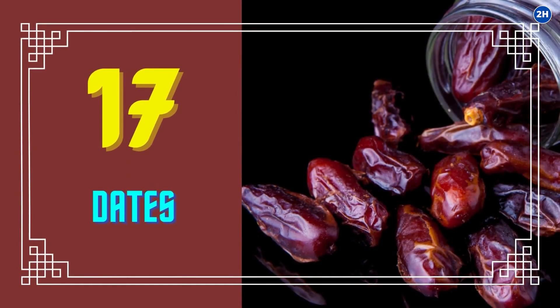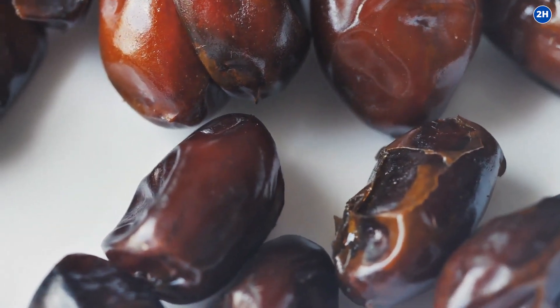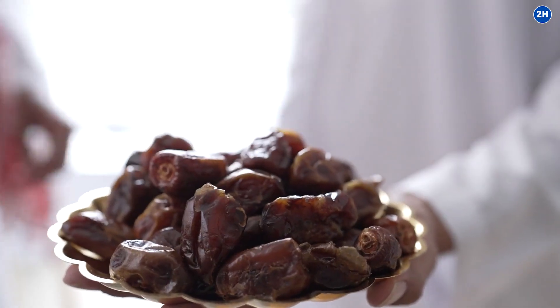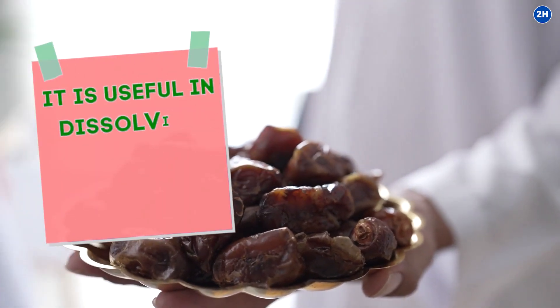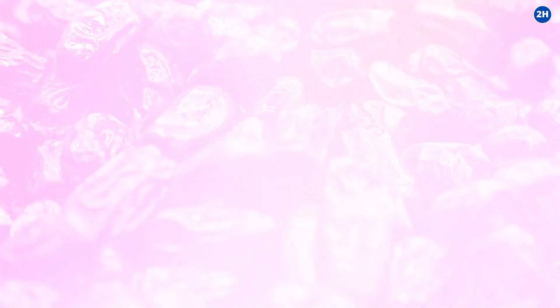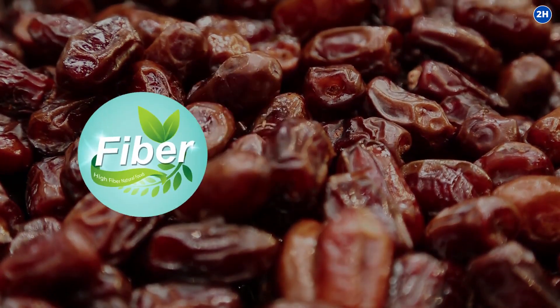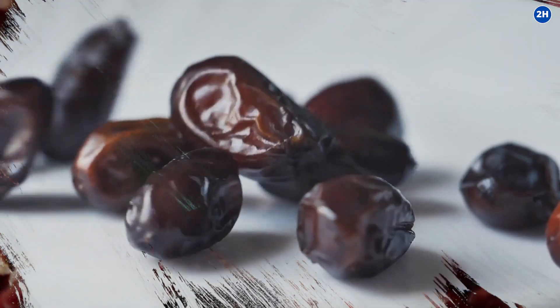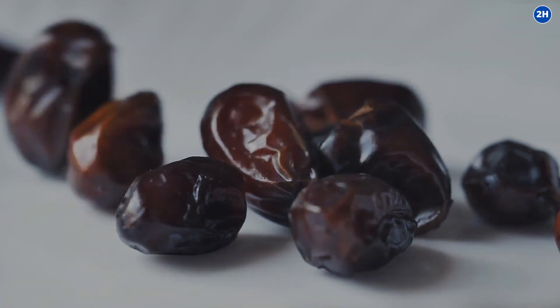17. Dates. When the dates are soaked in water for 24 hours and then eaten after extracting the seeds, it is useful in dissolving and removing kidney stones. Dates are abundant in fiber, which helps in reducing the risk of kidney stones. The magnesium component in dates also cleanses the kidneys.